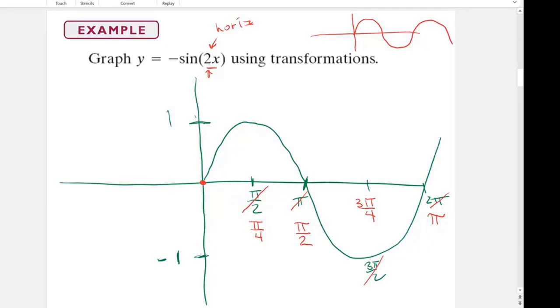And let's say that right here was 2 pi. Now, what really happened is I compressed it. Instead of stretching it like I do vertically, I'm compressing it.